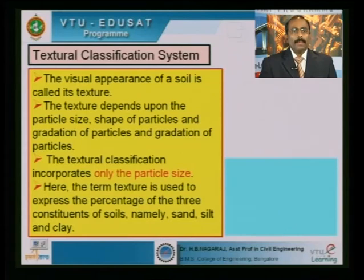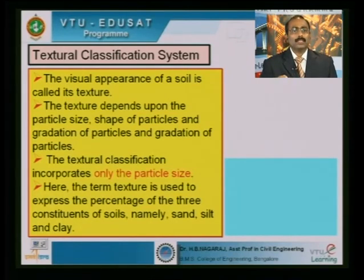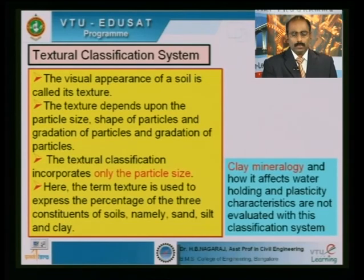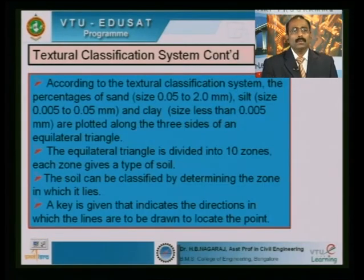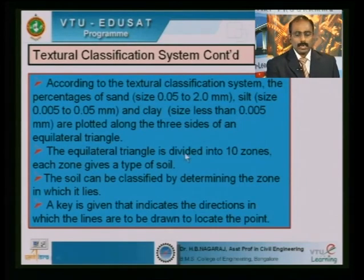The textural classification is based on the visual appearance of the soil — not only particle size but also how the particles appear. Clay mineralogy and water-holding capacity are not evaluated in this system. Also called the triangular classification system, an equilateral triangle is divided into zones — one side for clay percentage, one for silt, one for sand — adapted from the US Public Roads Administration.